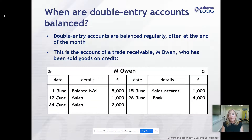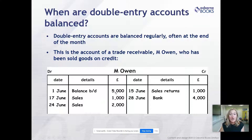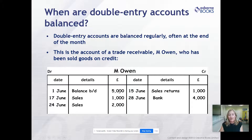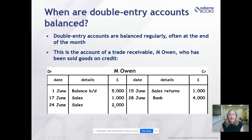We've got an example here - the account of M. Owen, who's a trade receivable. This business has sold goods on credit to M. Owen. You can see the T-account, debits on the left side, credits on the right side. On the 1st of June, there's a balance brought down of £5,000 - M. Owen owed the business £5,000 on the debit side, because trade receivables are an asset on the debit side. M. Owen has also purchased more goods: sales of £1,000 on the 17th of June and £2,000 on the 24th of June.